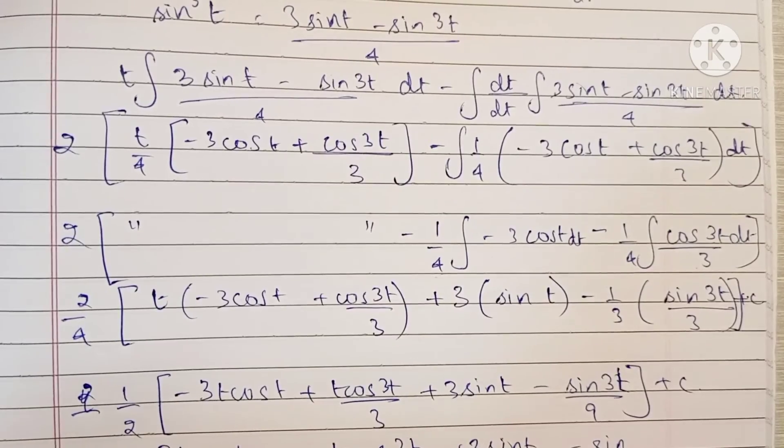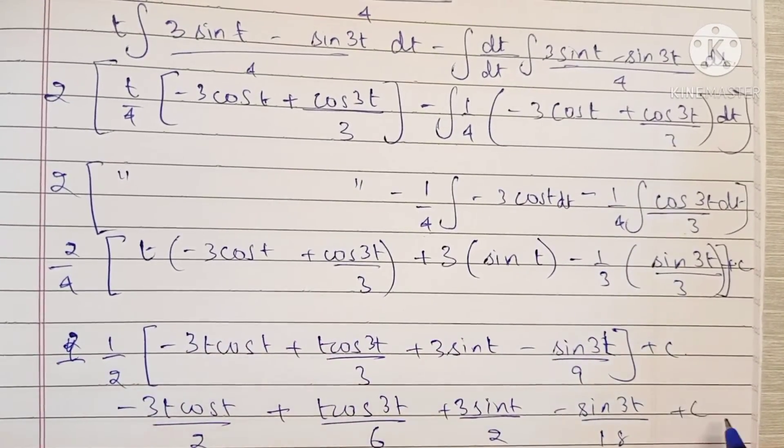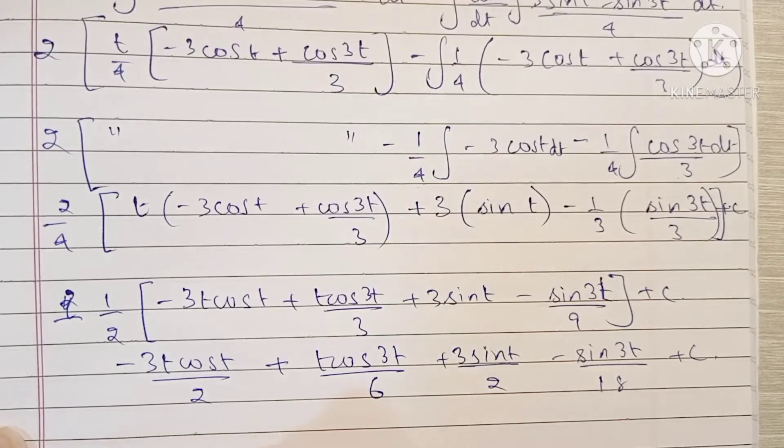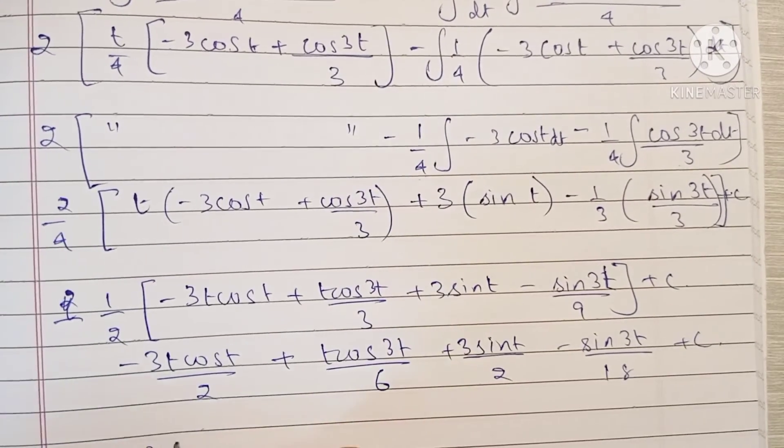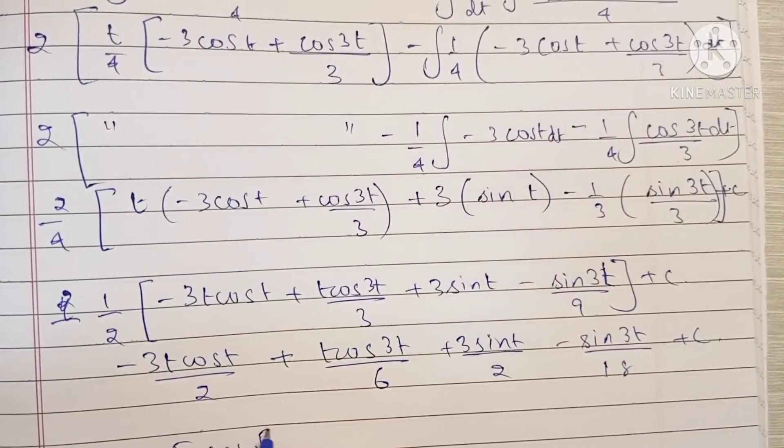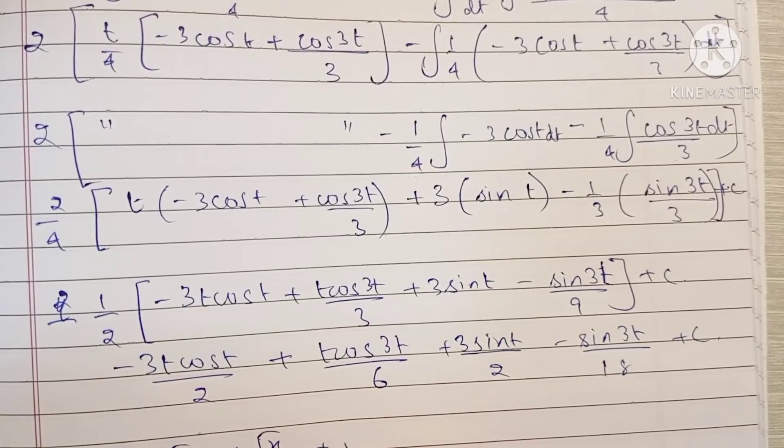Minus sin 3t upon 18 plus c. And then replacing t with root x: minus 3 root x cos root x by 2, plus root x cos 3 root x by 6, plus 3 sin root x by 2, minus sin 3 root x by 18 plus c.